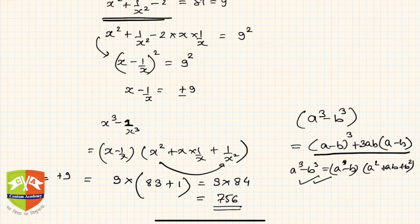If x - 1/x is -9, then what will happen? Nothing will happen; only the sign will change here. This will become simply -9, and everything will remain the same. But usually we take the positive. So x³ - 1/x³ is either 756 or -756.